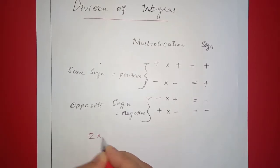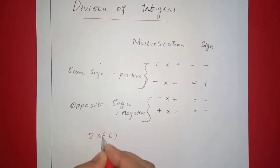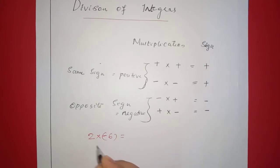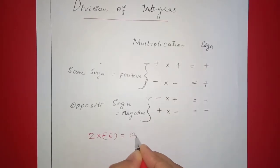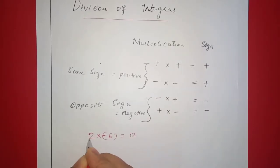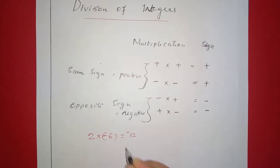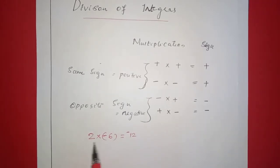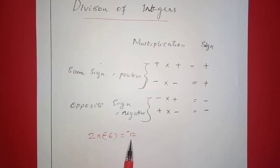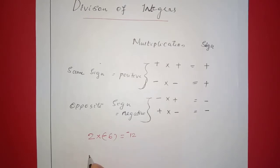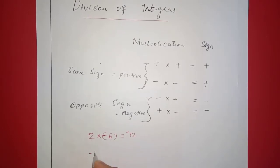For example, 2 into negative 6: 2 into 6 is 12. The answer is negative. The answer is negative.